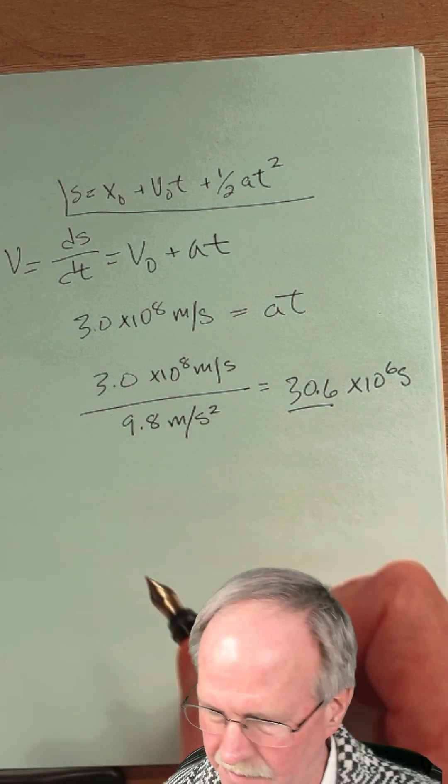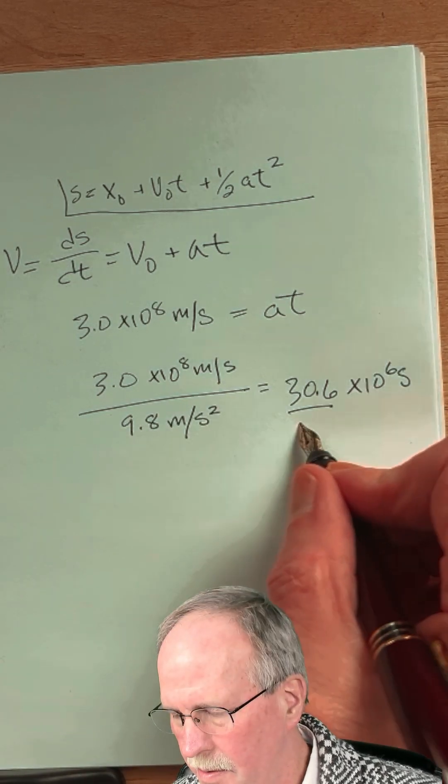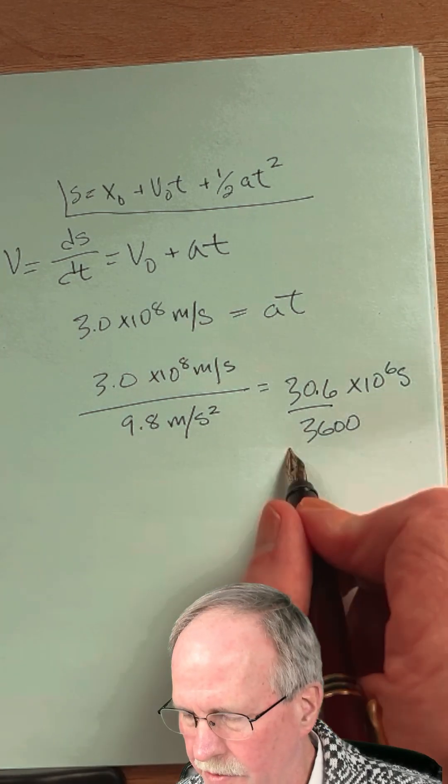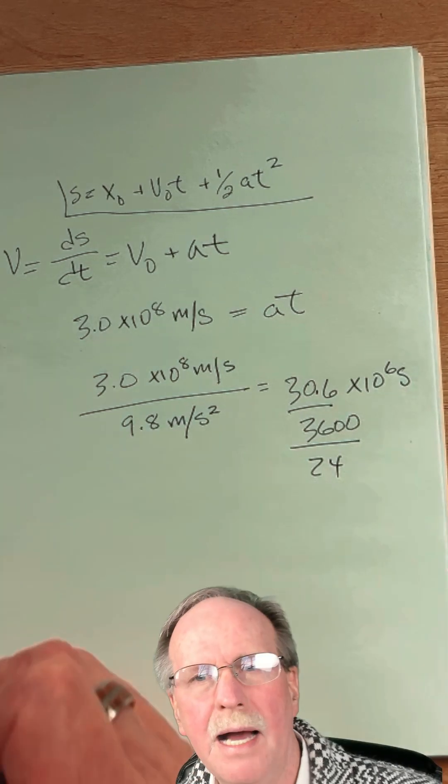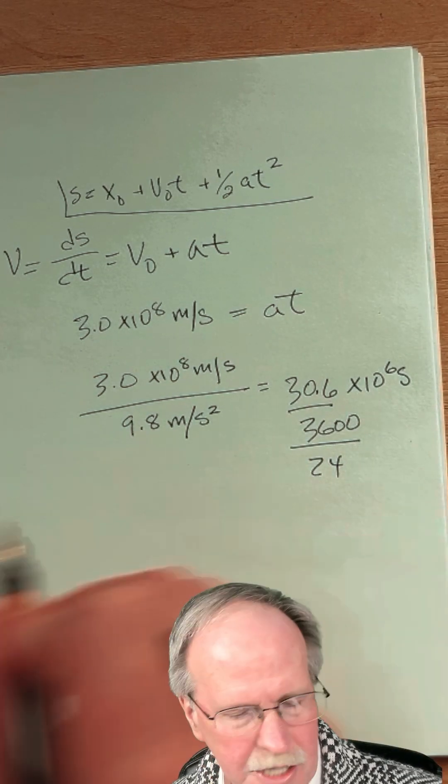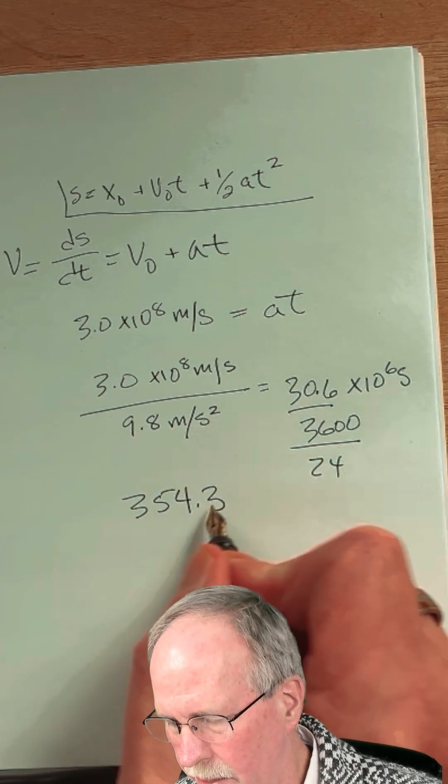If you divide this by 3600 you get the number of hours, and then if you divide it again by 24 you get the number of days, and it actually works out to 354.3 days, or 0.97 years.